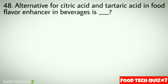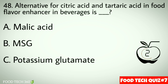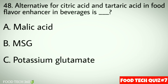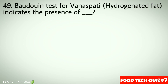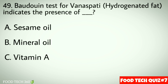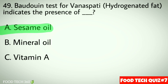Question number 48: An alternative for citric acid and tartaric acid as a flavor enhancer in beverages is — options: a) Malic acid, b) MSG, c) Potassium glutamate. Correct answer: a) Malic acid. Question number 49: The Baudouin test for vanaspati indicates the presence of — options: a) Sesame oil, b) Mineral oil, c) Vitamin A. Correct answer: a) Sesame oil.